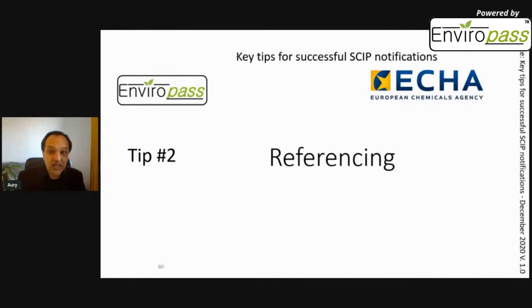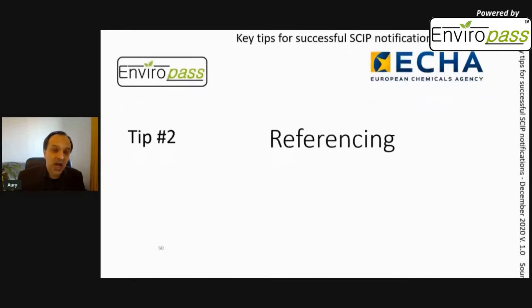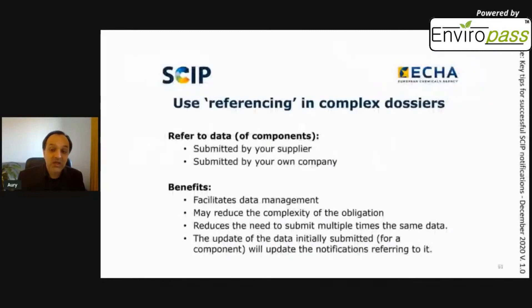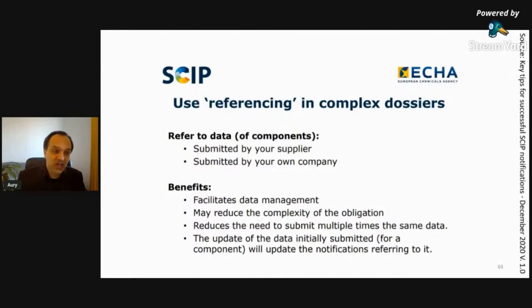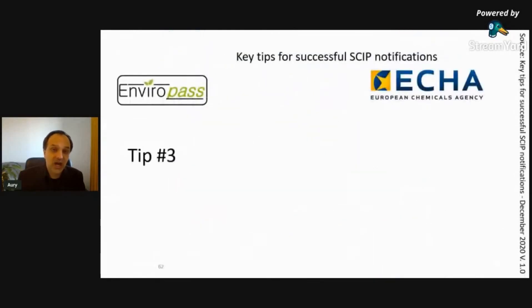The second useful tip is referencing. In complex dossiers, you can use referencing by requesting SCIP numbers from your suppliers. When you ask suppliers whether a product contains SVHCs, also ask if they have already registered on the SCIP database. If they have, request their SCIP numbers so you can enter them in your own declaration. This lets you benefit from information your suppliers have already entered, saving time and avoiding mistakes.